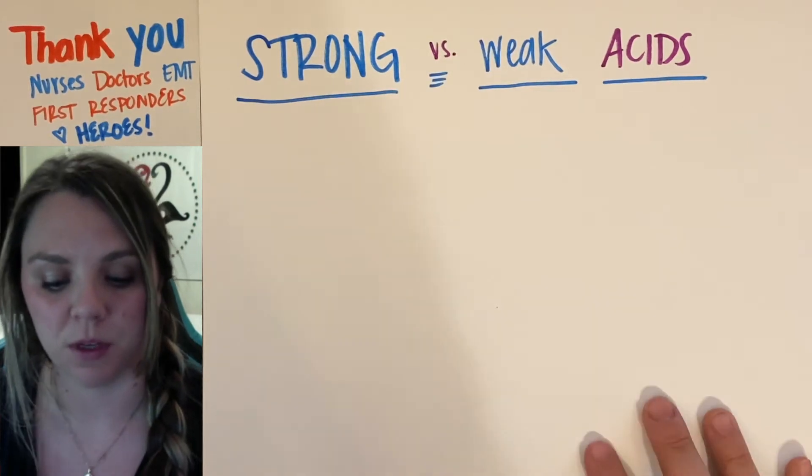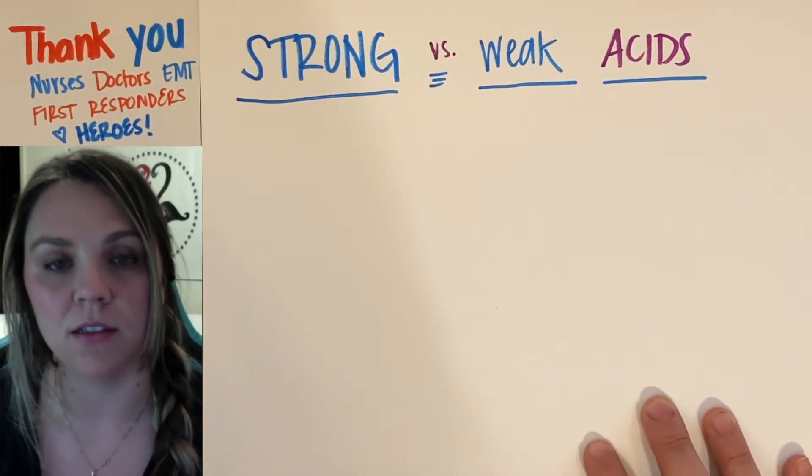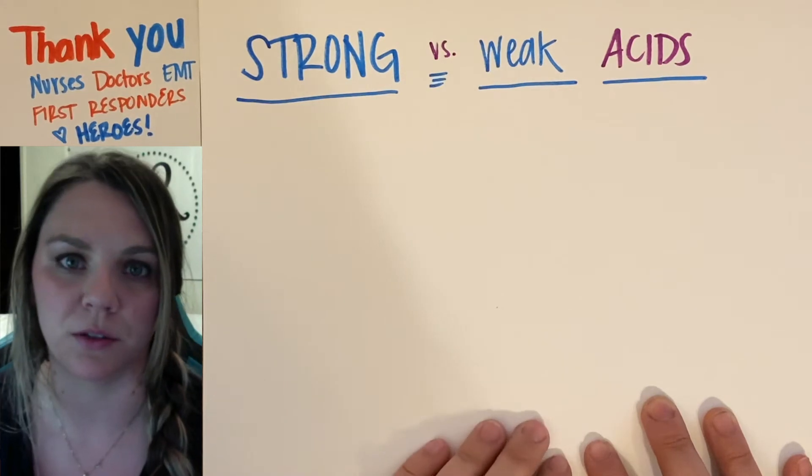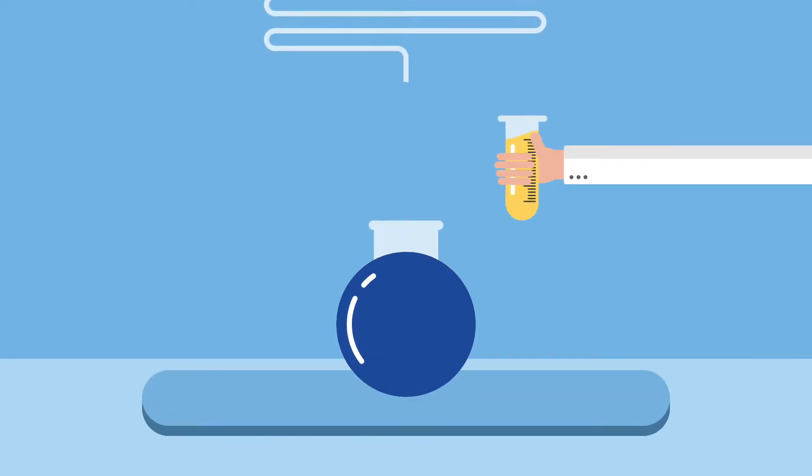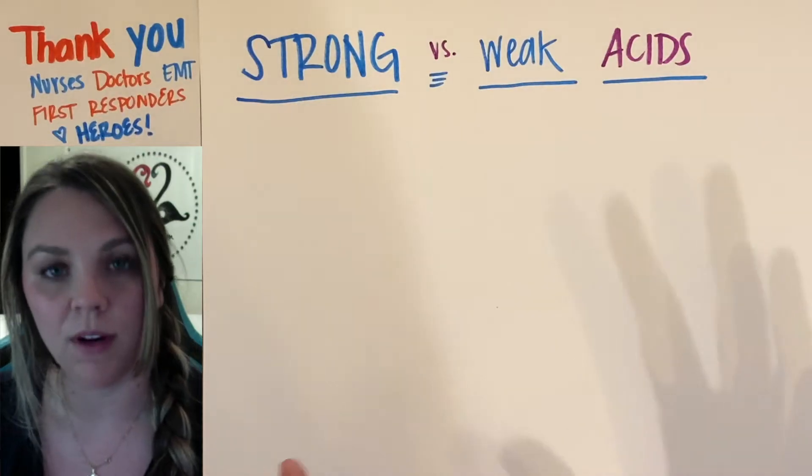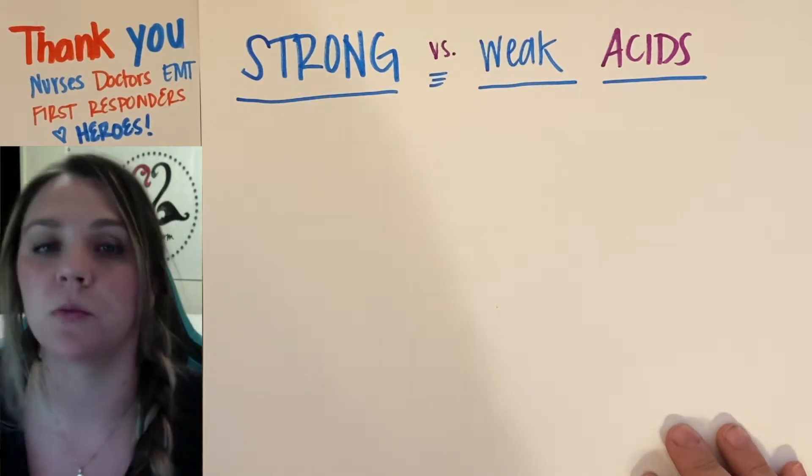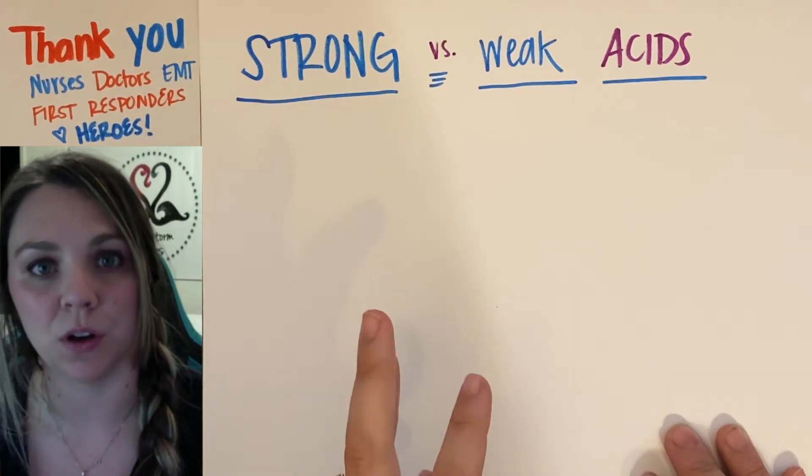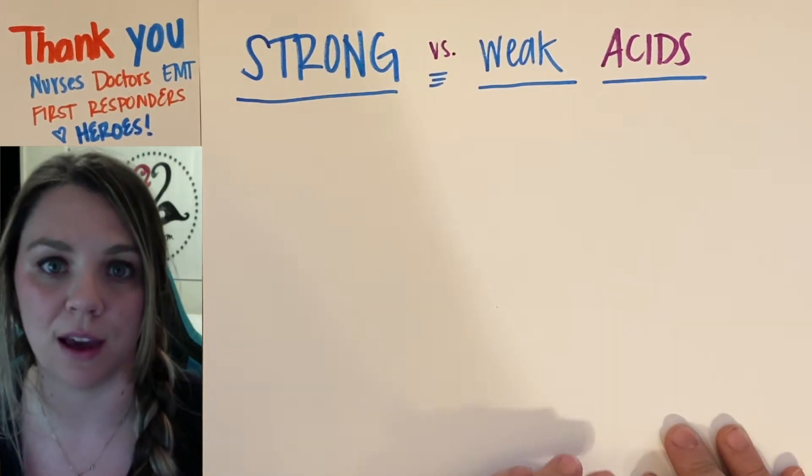So we're going to look at the difference between strong and weak acids and what that means on your electrolyte table. We know what acids are. Now we need to figure out the difference between strong acids and weak acids.